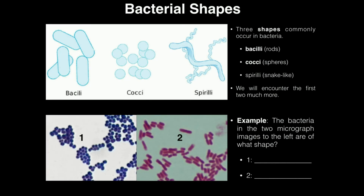Now the last thing I want to cover in this presentation for exercise two are shapes of bacteria. There are three very common shapes you can run across. I'm going to go over spirilli first because we're really not going to see them that much, so I'll just get it out of the way. Spirilli are snake-like — think S for spirilli, S for snake. They're almost like corkscrews, very long and thin. We're not going to encounter these much.